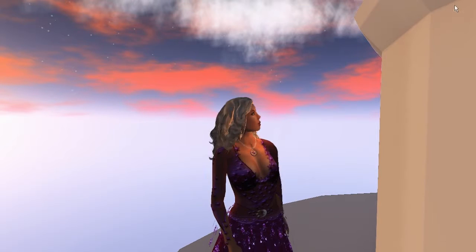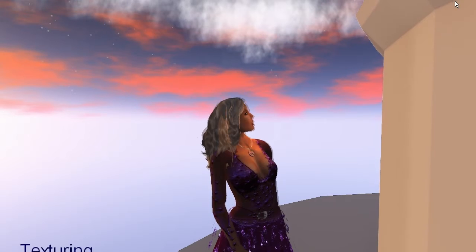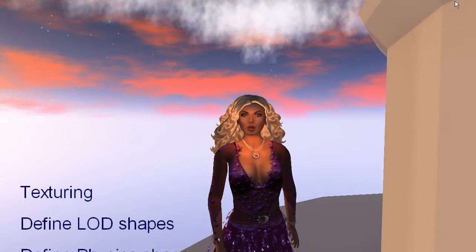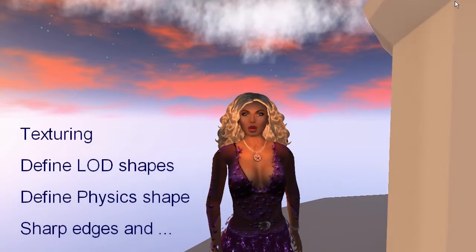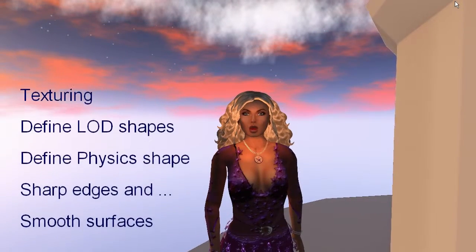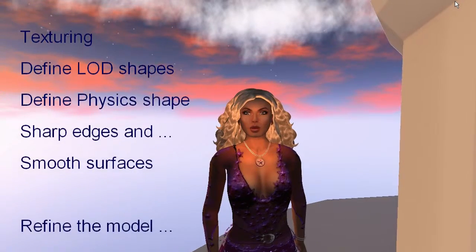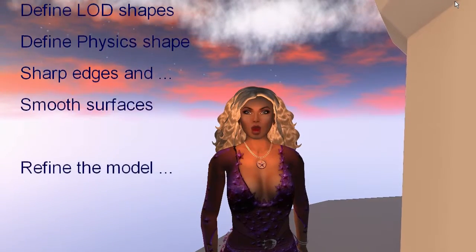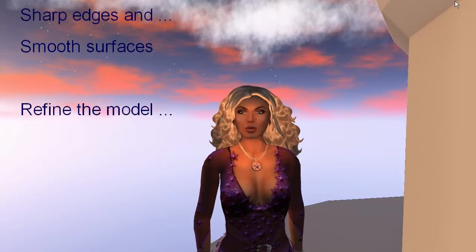So what is the next task? Clearly we will begin with texturing the tower. We will also put our attention to the 4 LOD shapes and the physical shape of the object. Then we want to define sharp edges and smooth and rounded areas. And finally we want to add more details to the light section of the tower. Again back to Blender — see you later.